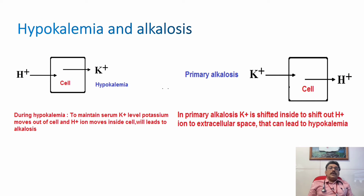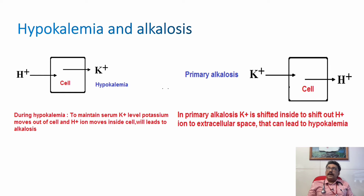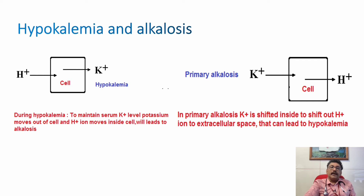During hypokalemia, to maintain serum potassium, potassium moves out of the cells and hydrogen ion moves inside—leading to alkalosis. In primary alkalosis, potassium shifts into the cell to push hydrogen ion out to the extracellular space, causing hypokalemia. Therefore, both are interrelated, and in any case of metabolic alkalosis there will typically be some degree of hypokalemia.